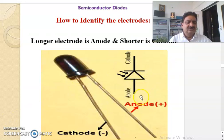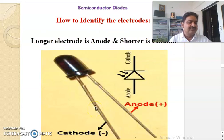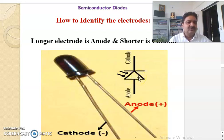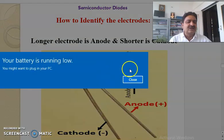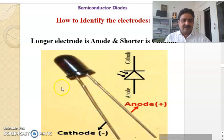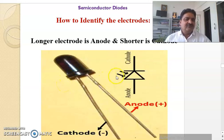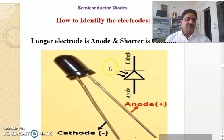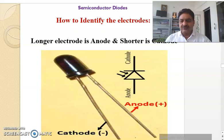This is also the symbol of photodiode. The longer electrode is anode and the shorter one is cathode. We also identify using the notch. The difference between the symbol of LED and the symbol of photodiode is: in LED, the light rays are shown outside, i.e., outward arrows. In photodiode, incident arrows are shown inward. So you can easily identify the symbols of LED and photodiode.